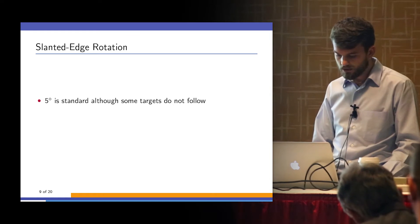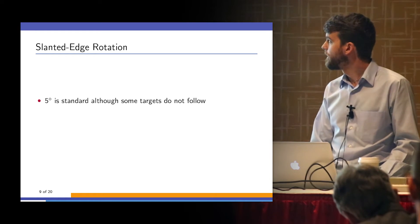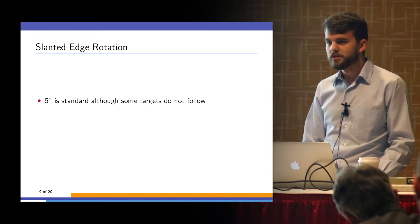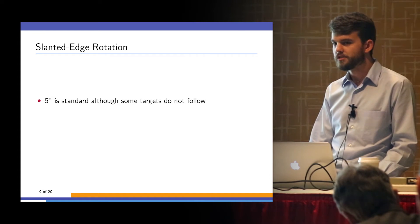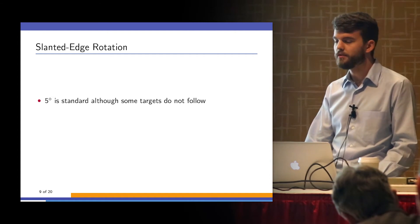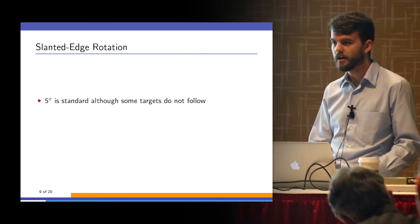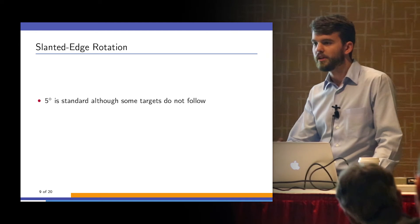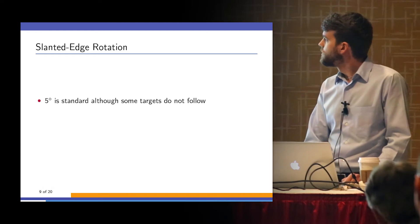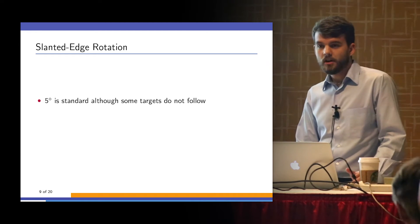I'm going to move on now to slanted edge. For the slanted edge SFR measurement, there has to be a slant. The reason for that is that the phase offset is necessary to perform the binning operation. If you don't have that offset, then you don't have a valid measurement. You can't interpolate the correct values. Five degrees is the commonly used number.